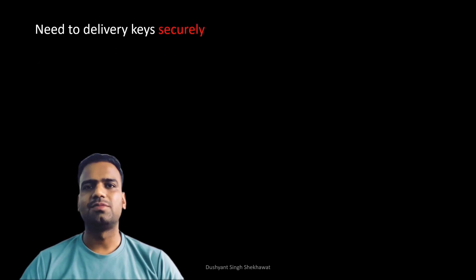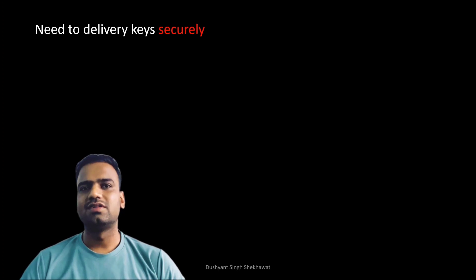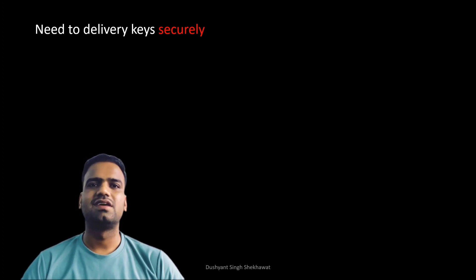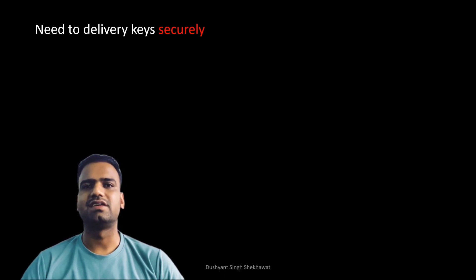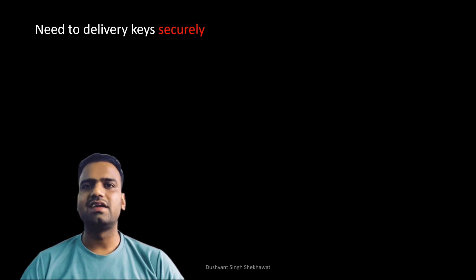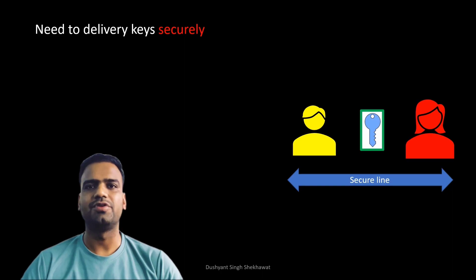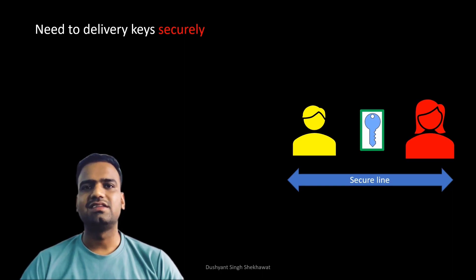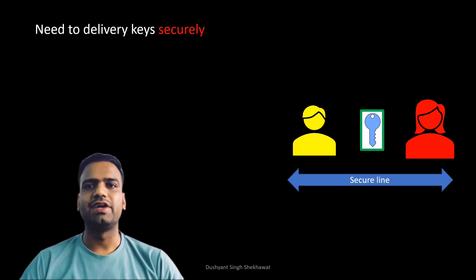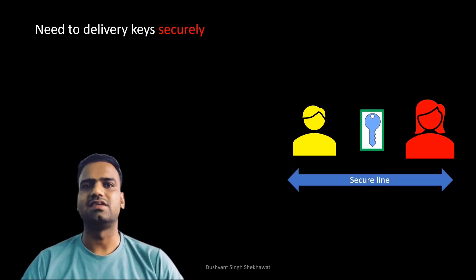A key limitation of symmetric encryption is the need for one party to securely deliver the key to another before exchanging data. Since both the sender and receiver use the same key, the two parties must exchange the key securely before they can start communicating. The challenge is: how do they share this key securely in the first place, especially when communicating over an insecure network or with someone unknown or untrusted?